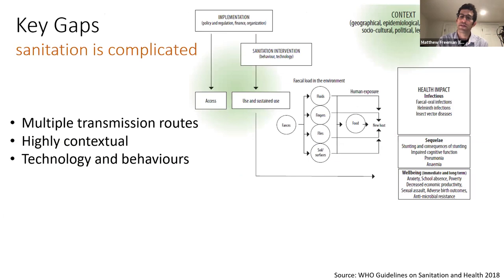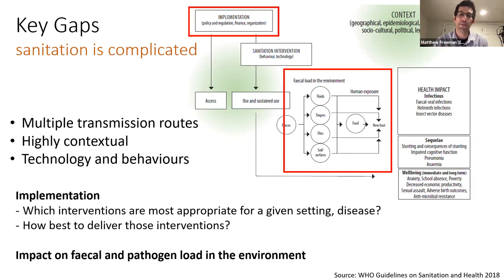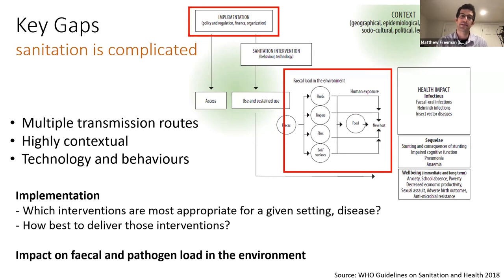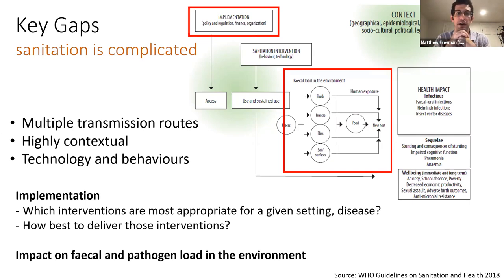The implementation component is really complicated. The fecal load in the environment is also very complicated as it relates to NTDs. Even if you give mass drug administration to all community members with STH, the eggs can still live in the environment for up to two years. How do you actually measure the fecal load or the egg load in the environment and mitigate that risk over enough time to control and eliminate the disease in the population?